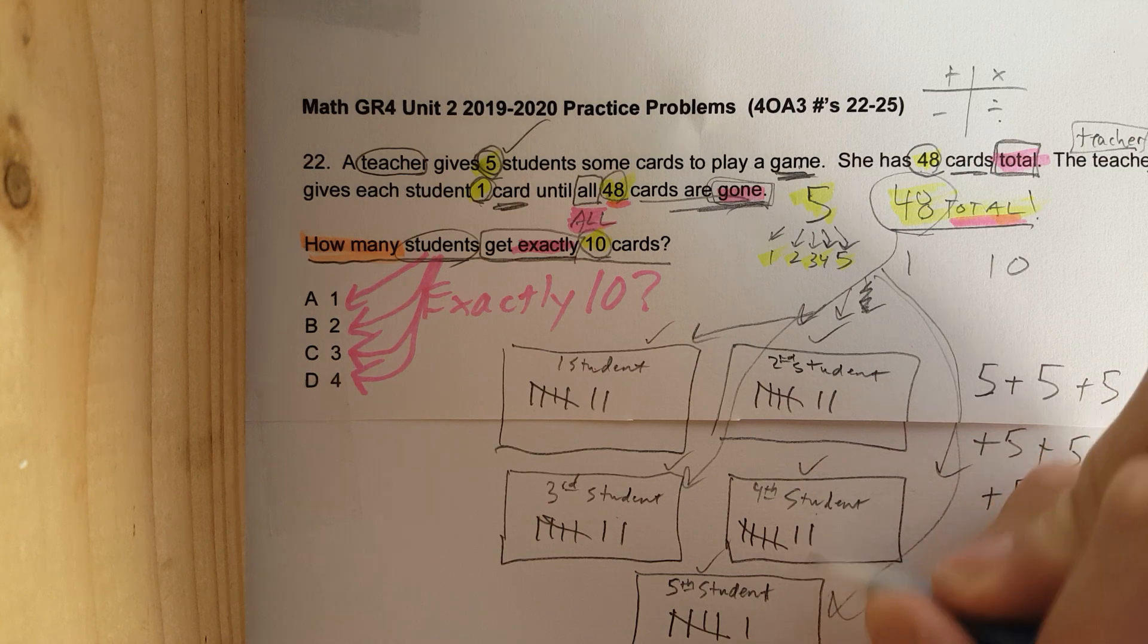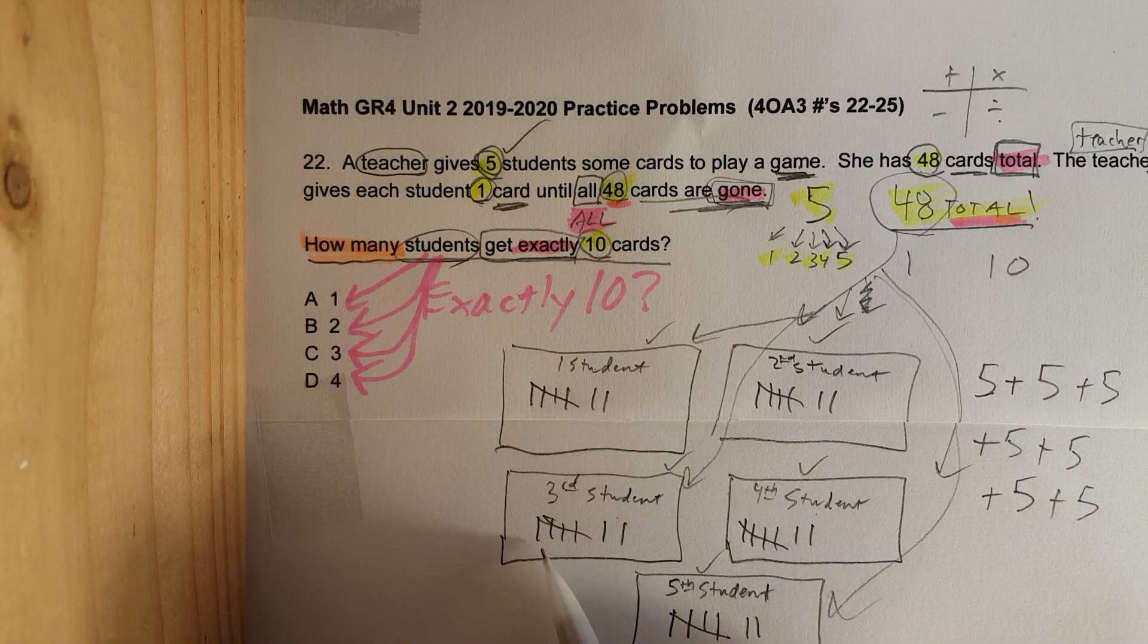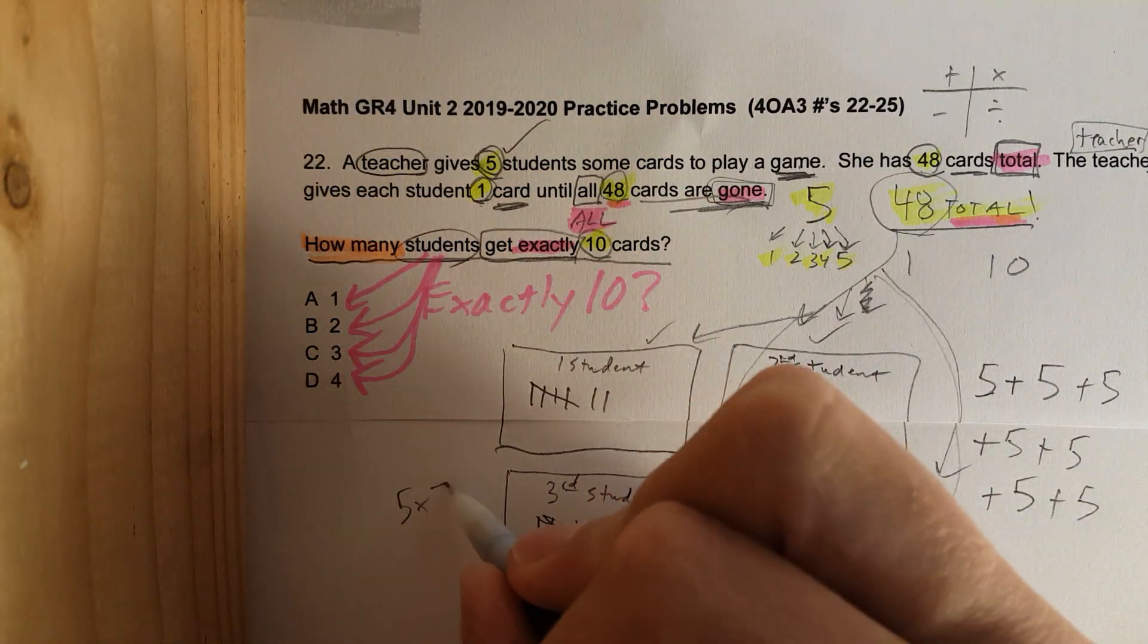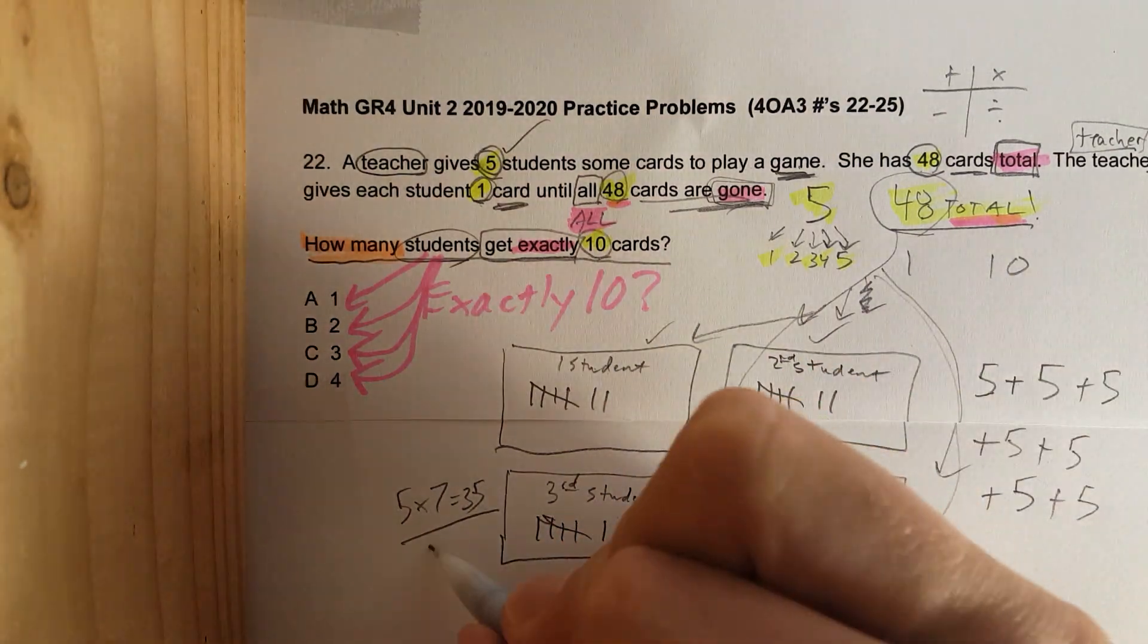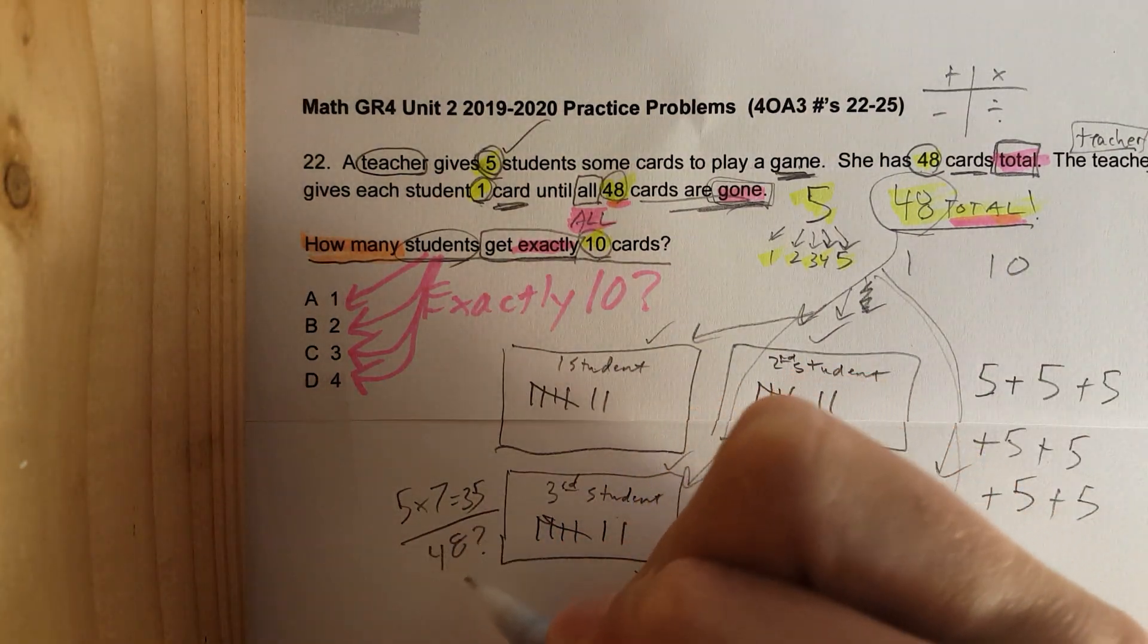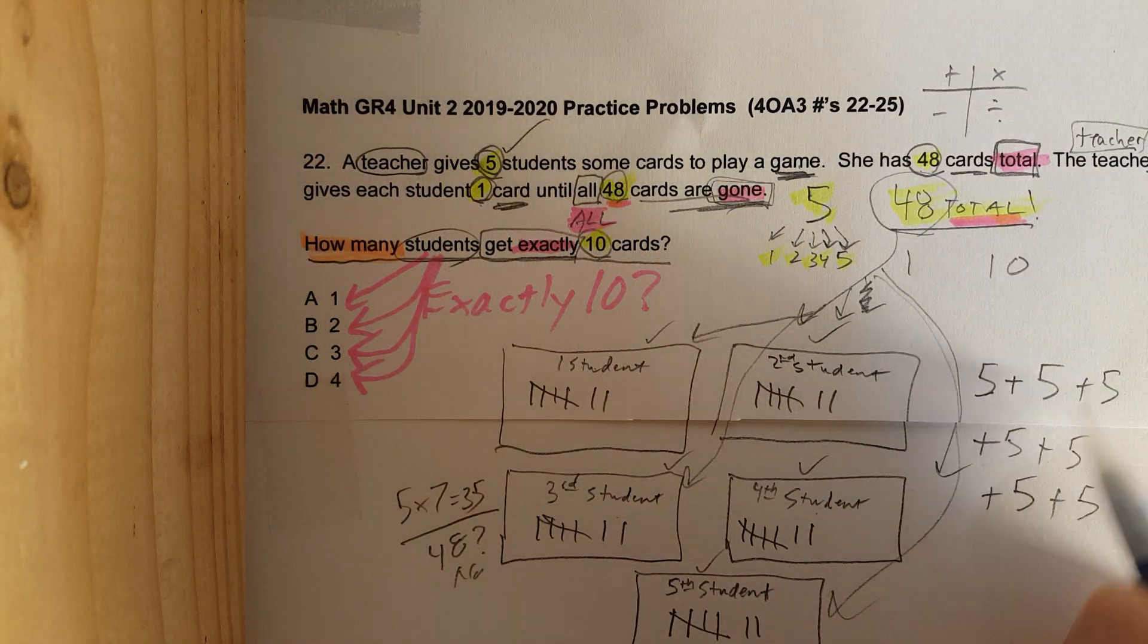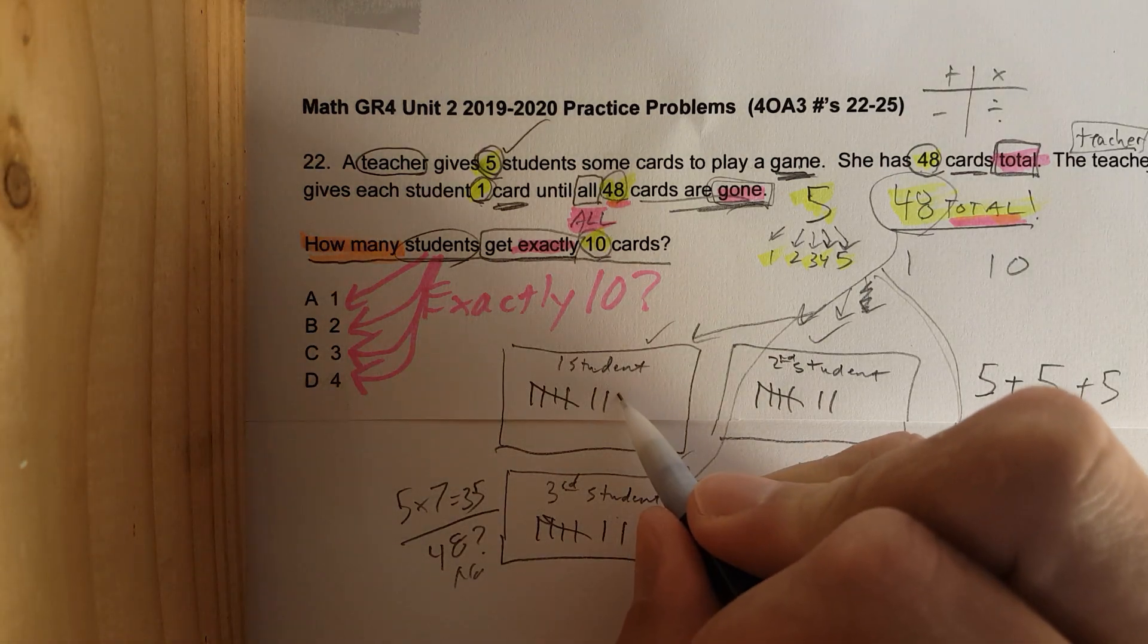What do I mean by that? Right now there are five students. Every student has seven cards. Five times seven is 35. I'll write that over here: five times seven is 35. Is that 48? No, we need to keep going. Let's double check: one, two, three, four, five, six, seven. Seven times five is 35. Let's keep dealing out the deck of cards.